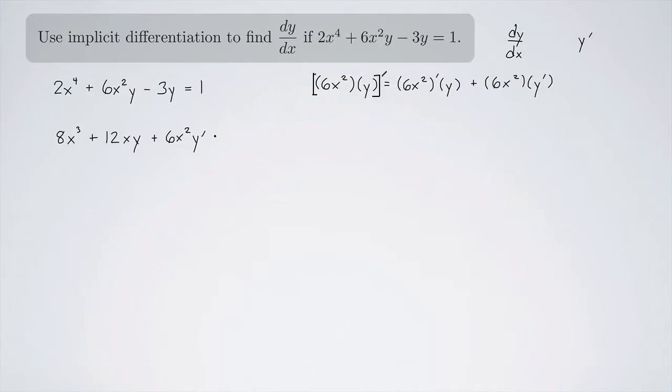And now we have minus 3y. So that's going to be, the 3 is just going to stay there, and the derivative of y, that's y prime. Equals, and what's the derivative of a constant? Zero.